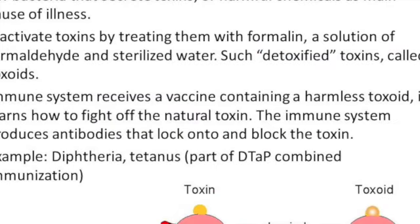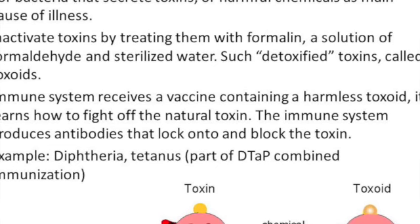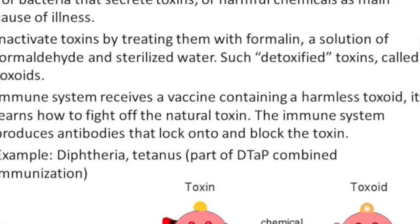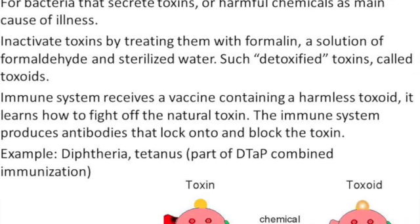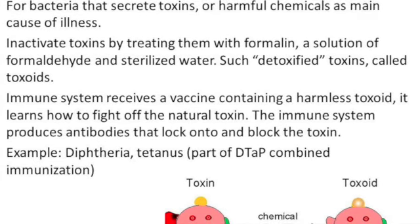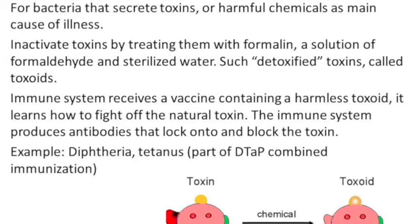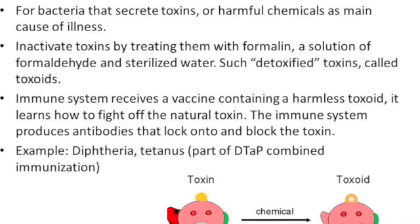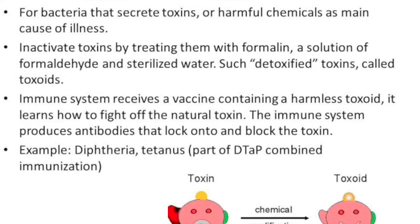Toxoid vaccines use a toxin — a harmful product made by the germ that causes the disease. They create immunity to the parts of the germ that cause disease, rather than the germ itself, meaning the immune response is targeted to the toxin instead of the whole germ. Like some other types of vaccines, you may need a booster shot to get ongoing protection. Toxoid vaccines are used to protect against tetanus and diphtheria.